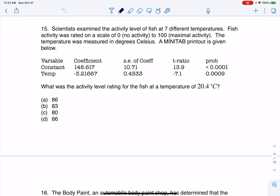Hey everyone, let's take a look at number 15. Scientists examined the activity level of fish at seven different temperatures. Fish activity was rated on a scale of 0 (no activity) to 100 (maximal activity). The temperature was measured in degrees Celsius, and a Minitab printout is given below.